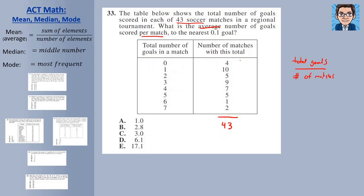So to find the average per match, we're going to find the total goals divided by the number of matches. And again, they told us that was 43, but we could have added this up. So we can multiply these to get the total number of goals. So if we scored zero in four different games, we've got zero. 10 different times we scored one. So that's going to be a total of 10 goals. 5 times 2 gets us 10. 9 times 3, 27. 7 times 4, 28. 5 times 5, 25. 1 times 6 is 6. And 2 times 7 is 14. So that is out of that number of games. That's a total number of goals that we had in all of those games.